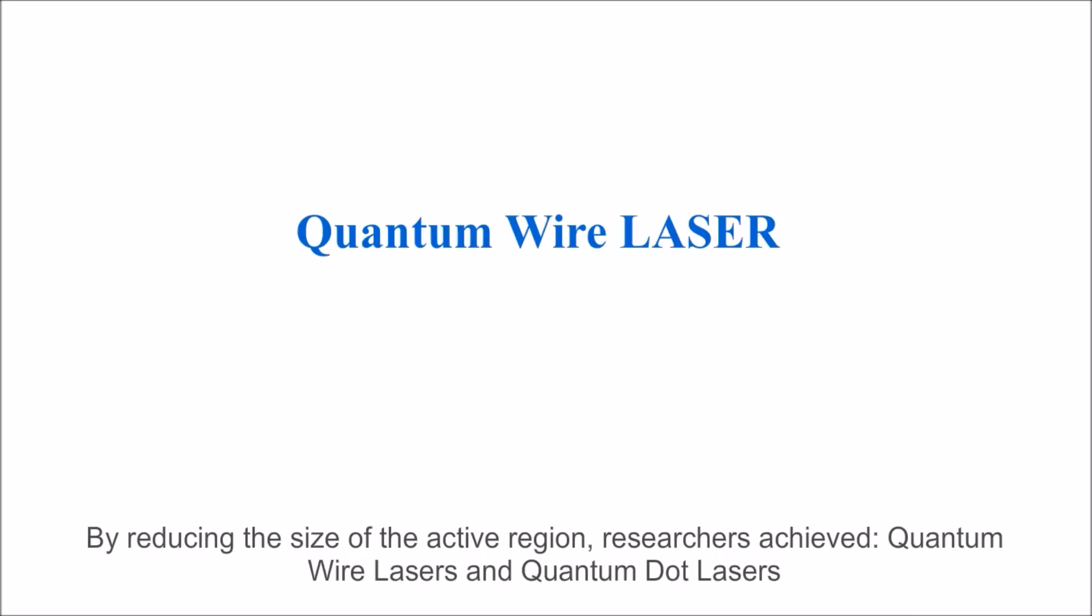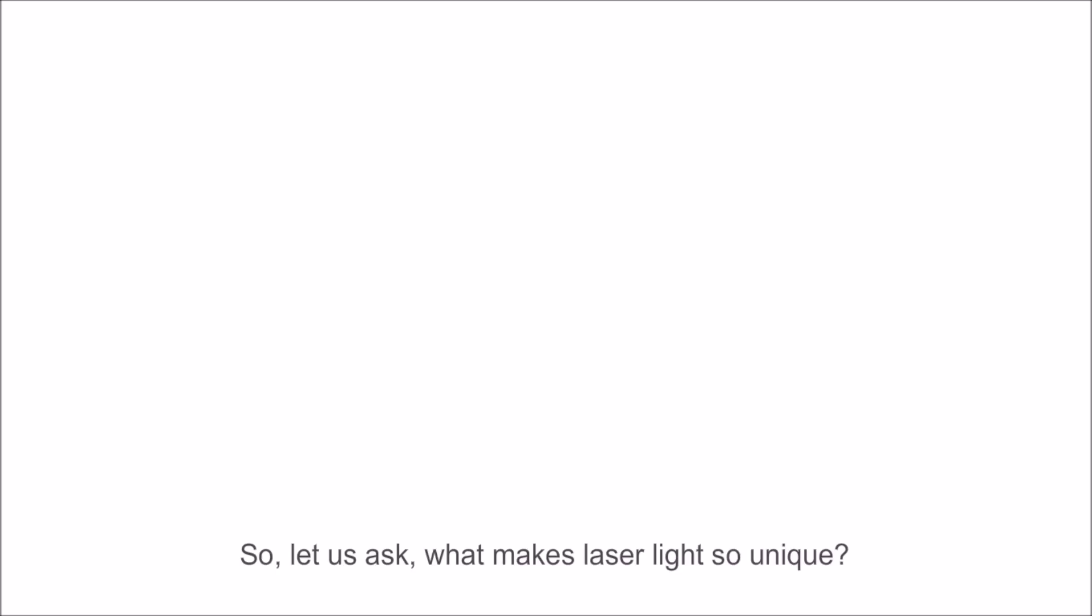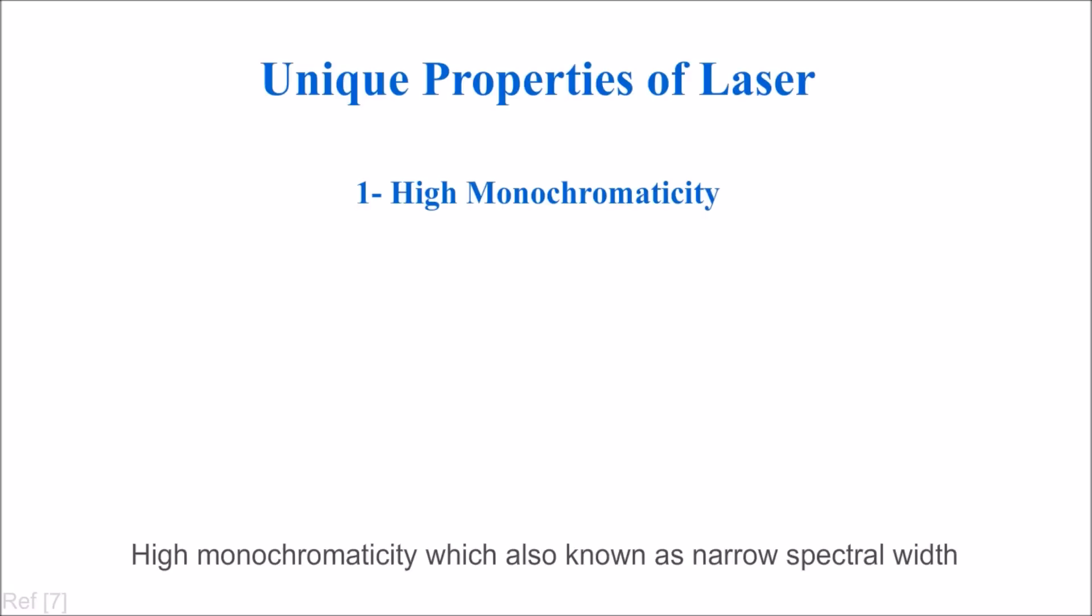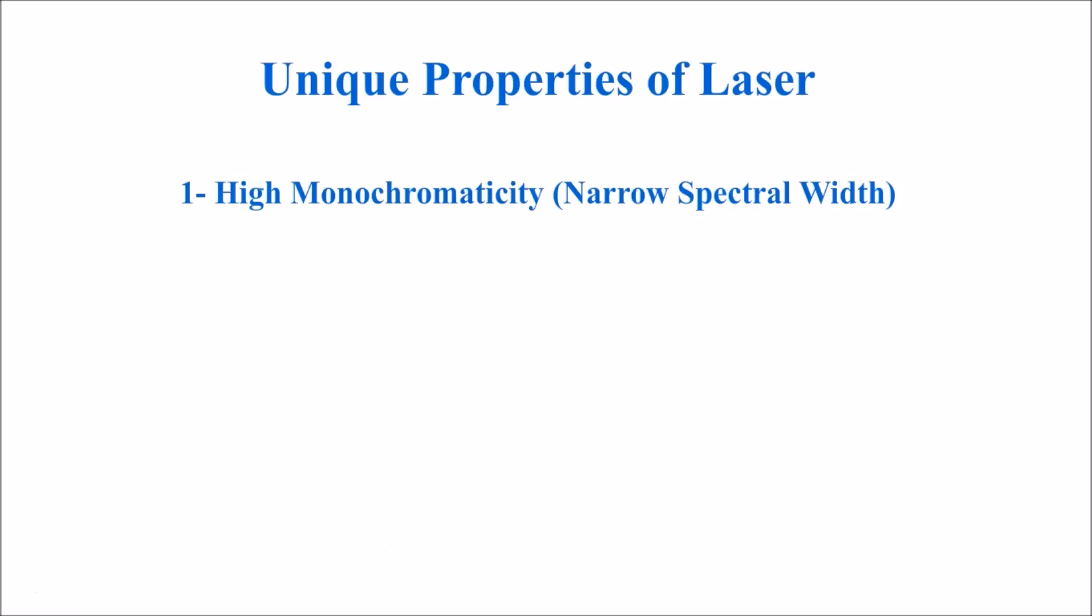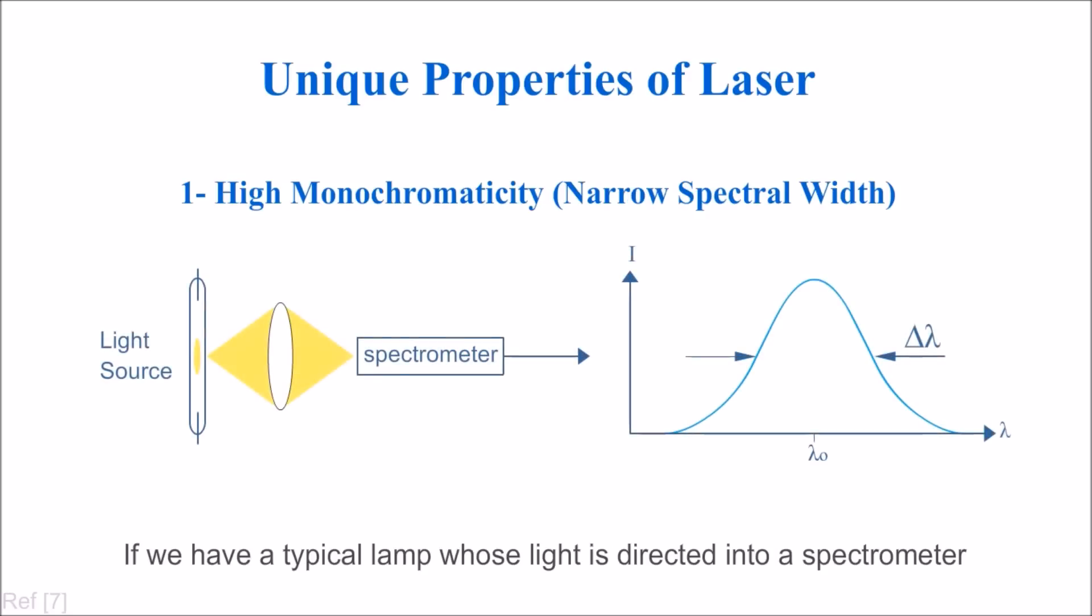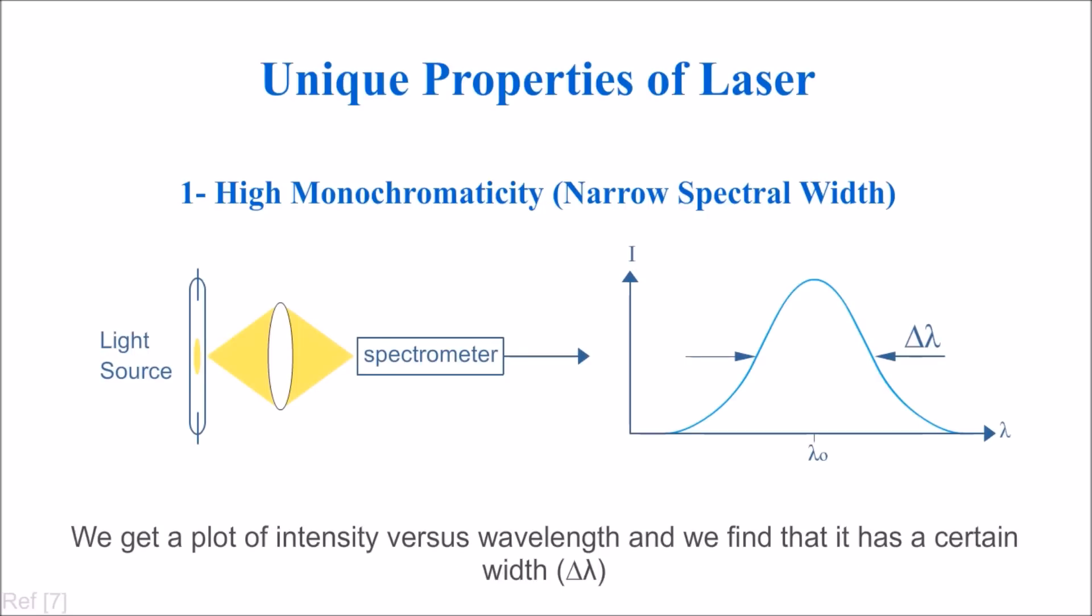Let us ask what makes laser light so unique. High monochromaticity, also known as narrow spectral width. If we have a typical lamp whose light is directed into a spectrometer, we get a plot of intensity versus wavelength with a certain width delta lambda. If we did the same for a laser device, we find the width is extremely narrow, meaning radiation of a monochromatic wave.